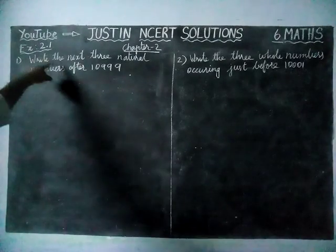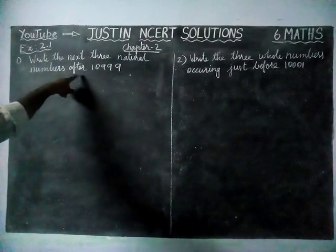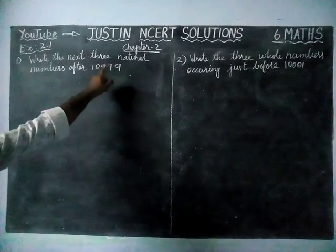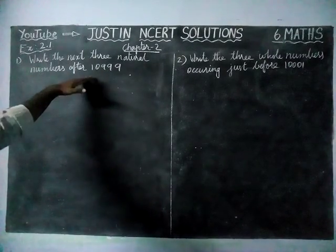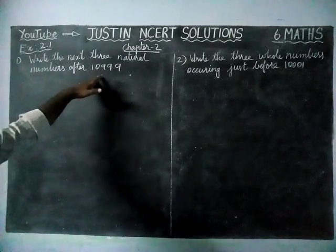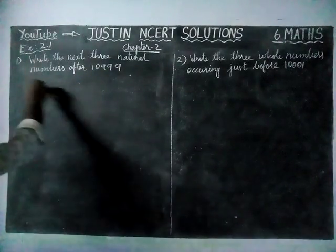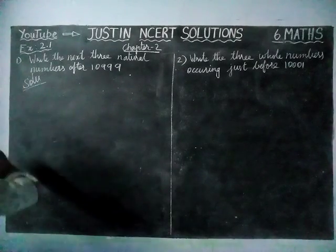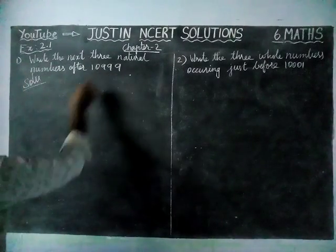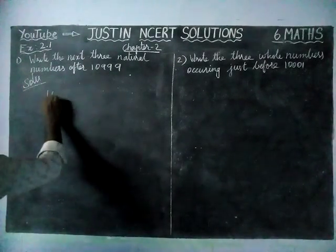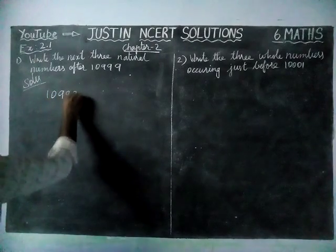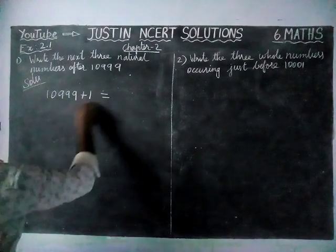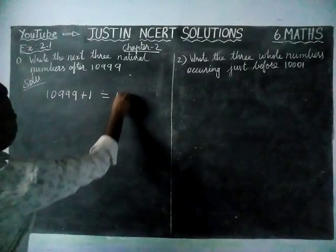Write the next 3 natural numbers after 10999. After this number, we have to find the successor of this given number. To find the successor, we have to add 1 to this number. 10999 plus 1 is equal to 11000.